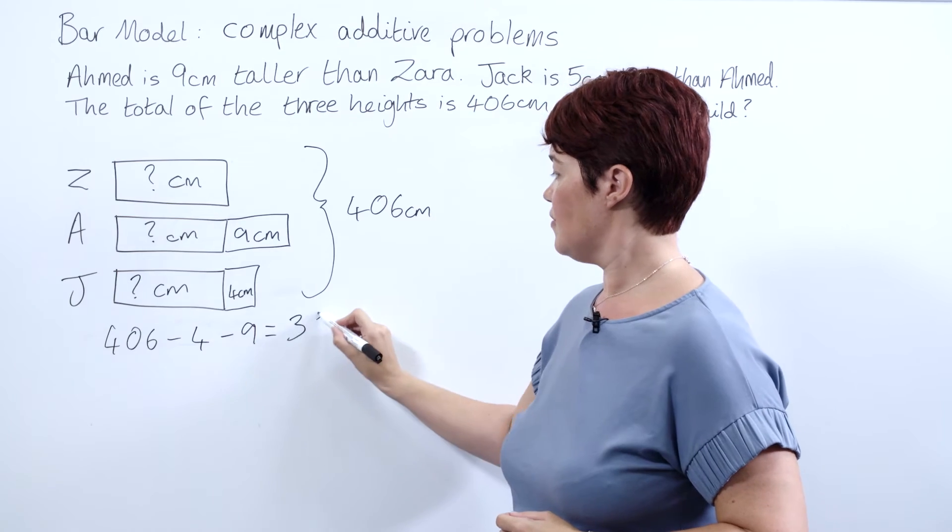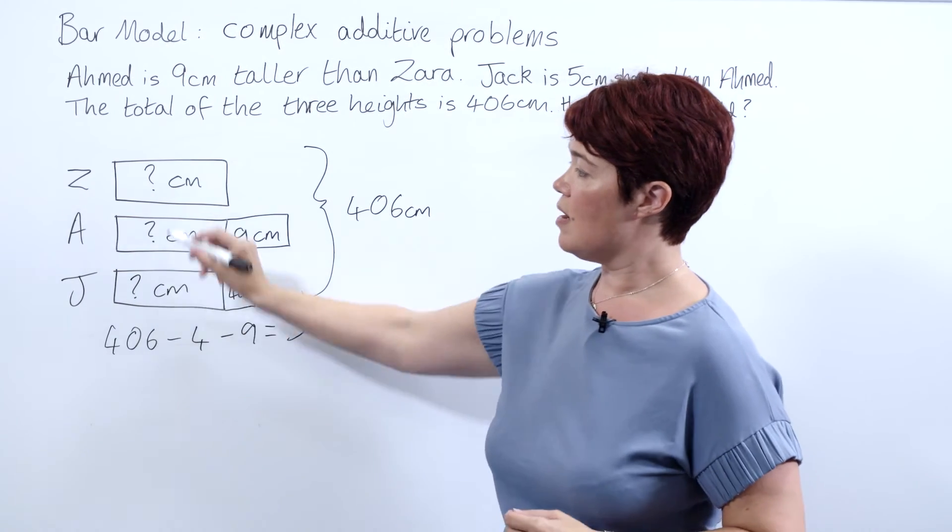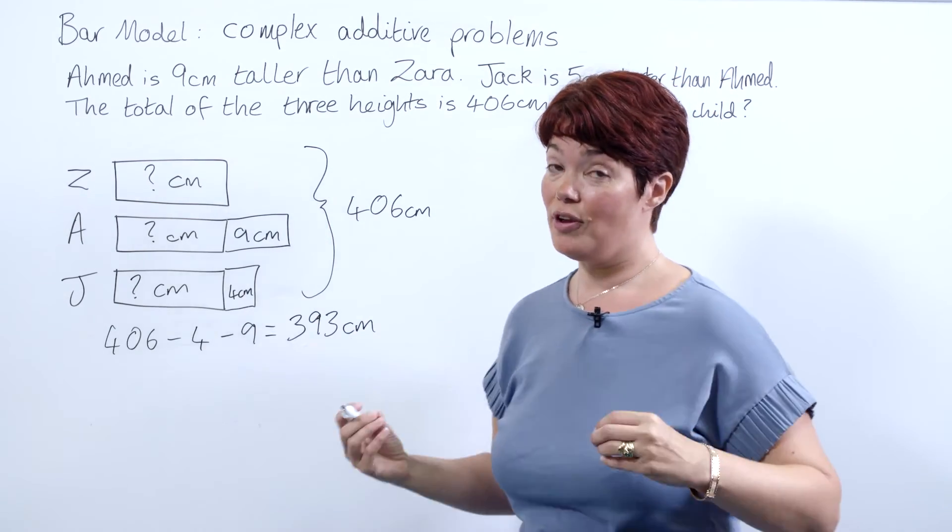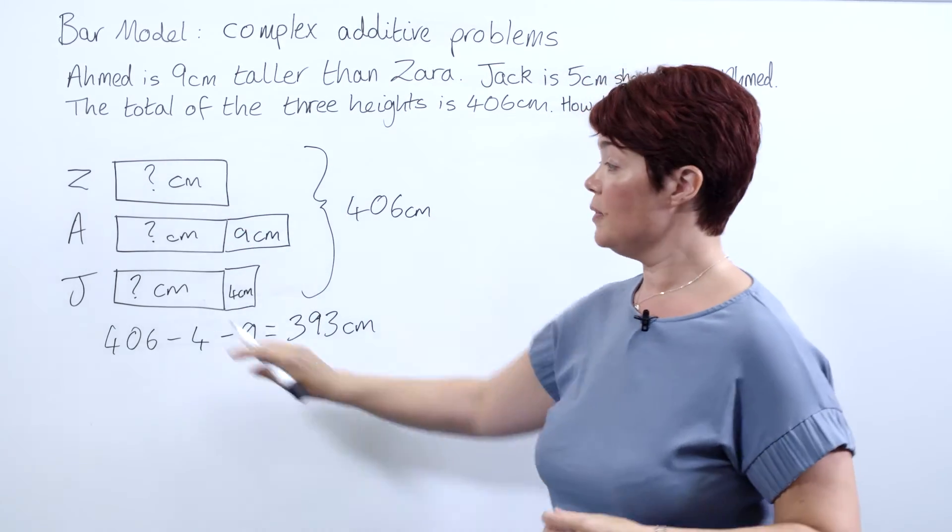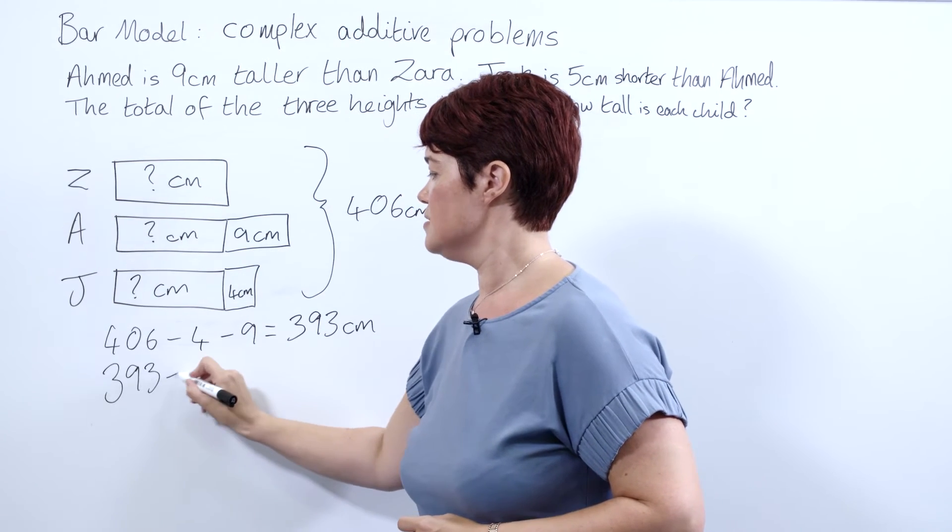This represents our three unknown bars. Now, because in the previous we had two, we've now got three, instead of dividing by two we're going to be dividing it by three. So 393 divided by three gives us 131 centimeters.